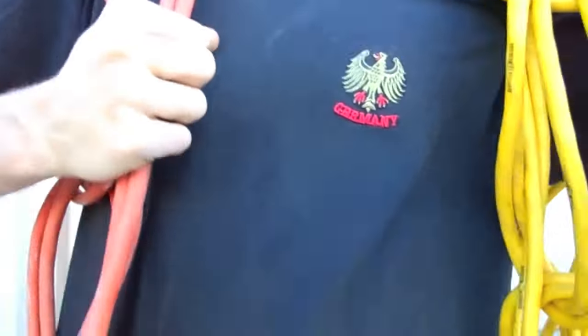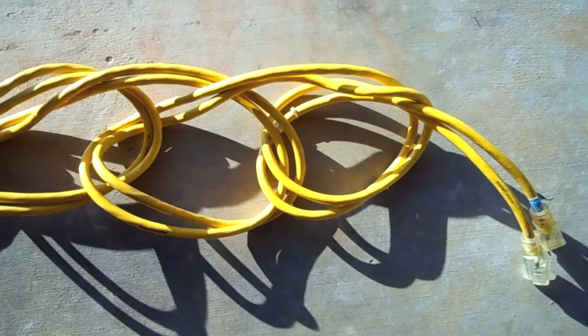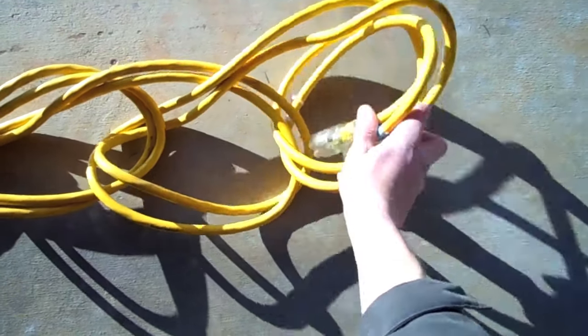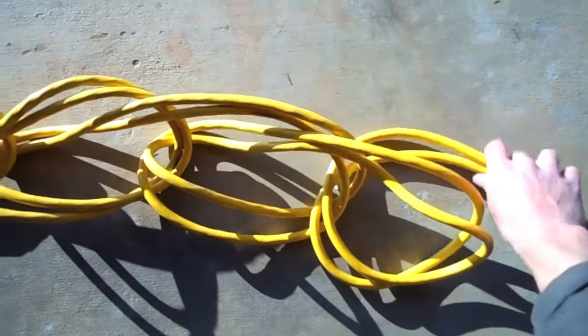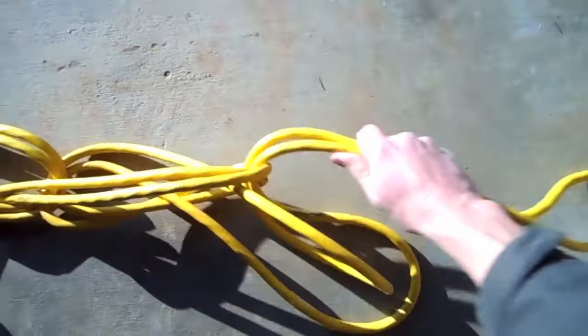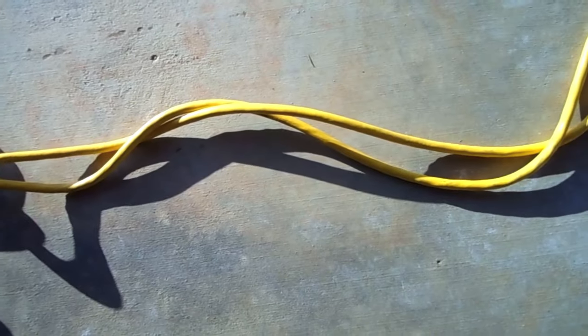The electrician's knot, also known as a daisy chain, is now complete. The chain can be unraveled for use by unhooking the two ends and pulling on them. Each coil will unravel with ease without leaving any unwanted knots or tangles.